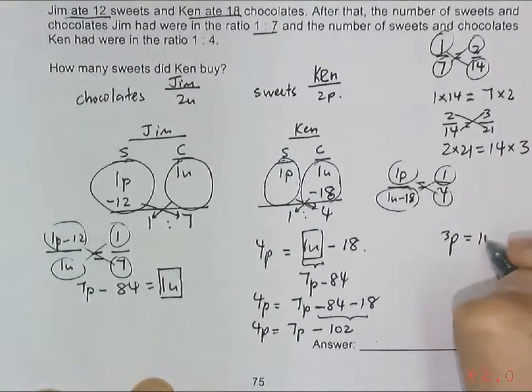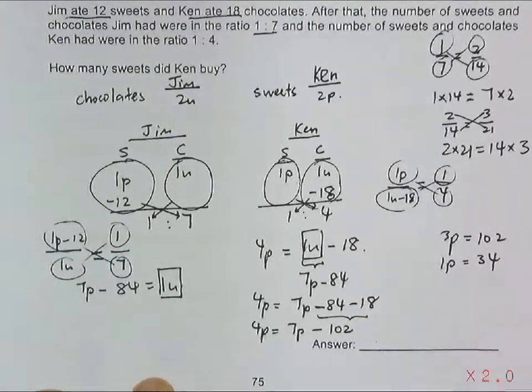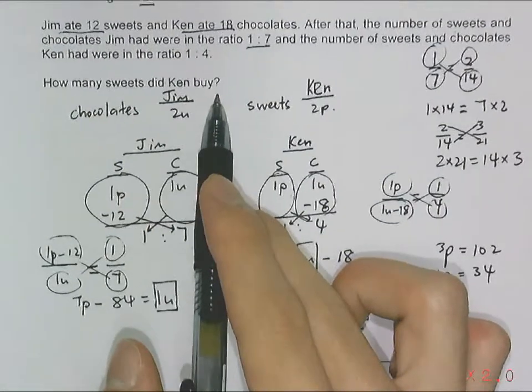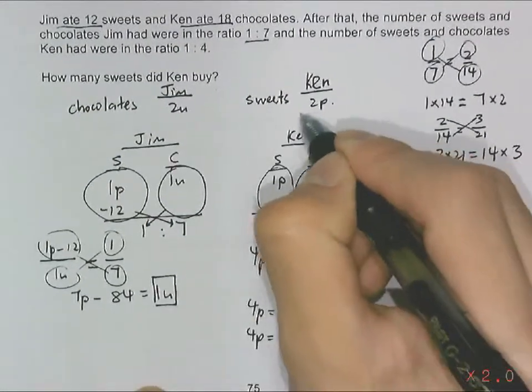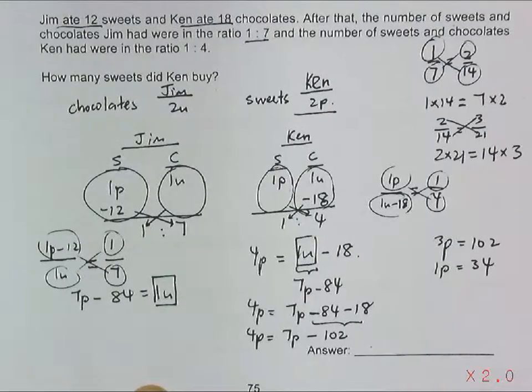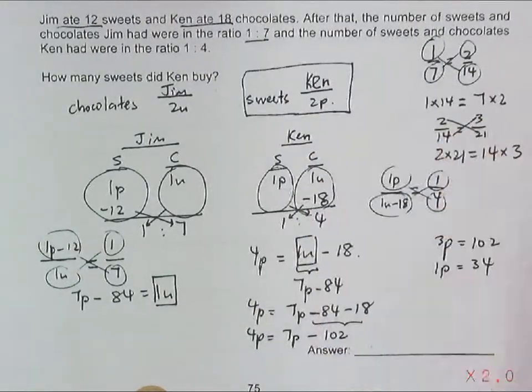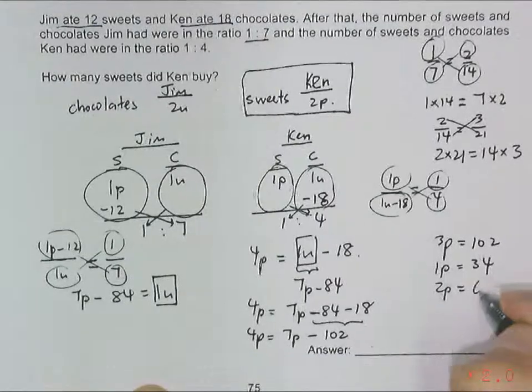How many sweets did Ken buy? The original question was Ken buying 2 parts of sweets. So this part is the answer: 2 parts of sweets, which is times 2, equals 68.